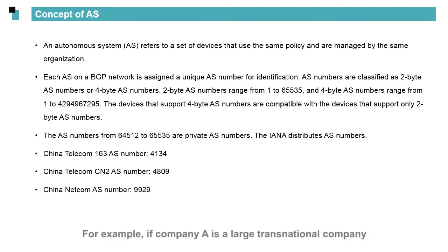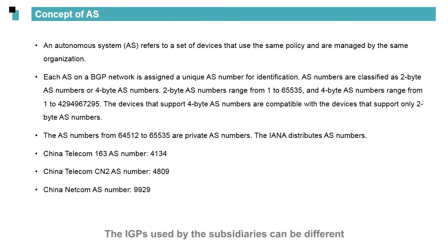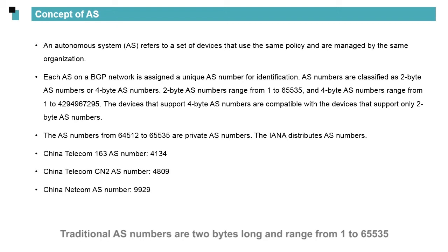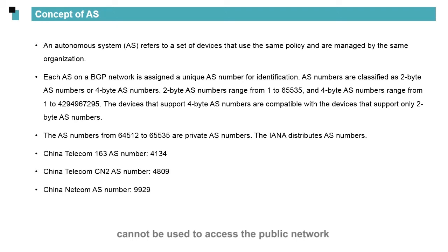The definition of ASs evolves along the continued development of data networks. For example, if Company A is a large transnational company, each of its subsidiaries can be planned in an AS. The IGPs used by the subsidiaries can be different. An EGP is required between ASs to implement route interworking. When an AS needs to access the public network, a public network AS number is required. Traditional AS numbers are 2 bytes long and range from 1 to 65535.